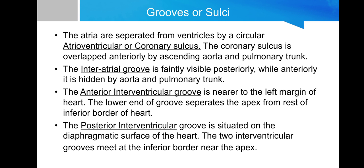There are grooves and sulci of the heart. The atria are separated from the ventricles by a circular groove called the atrioventricular or coronary sulcus. The coronary sulcus is overlapped mostly anteriorly by the ascending aorta and pulmonary trunk, so it is not much visible. Then comes the interatrial groove, which is faintly visible posteriorly, while anteriorly it is completely hidden by the aorta and pulmonary trunk. The anterior interventricular groove separates the right and left ventricles and is near the left margin of the heart. The lower end of the groove separates the apex from the rest of the inferior border.